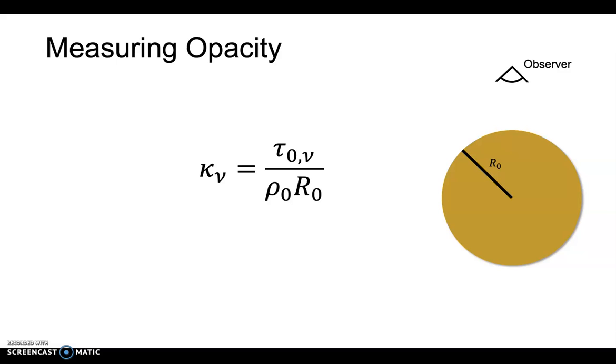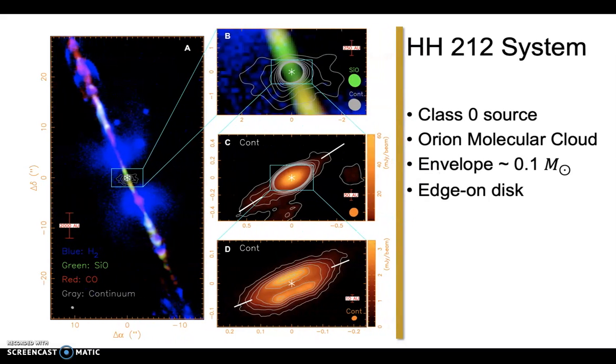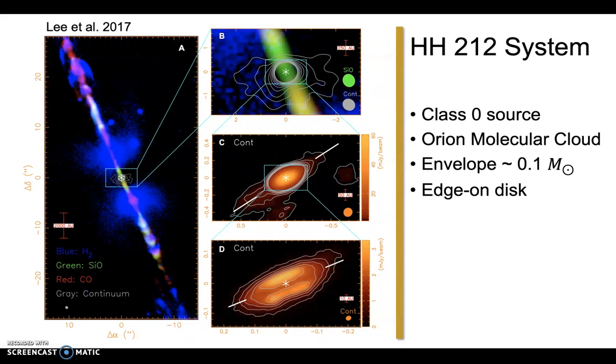Let me explain this using the HH212 protostellar system. The system is located in Orion at around 400 parsecs away. Towards the origin of the bipolar jet lies an edge-on disk that is embedded in a fairly massive flattened envelope, with roughly 0.1 solar mass. The disk itself, HH212 MMS, was first resolved with ALMA at band 7, with an angular resolution of 0.02 arcseconds.